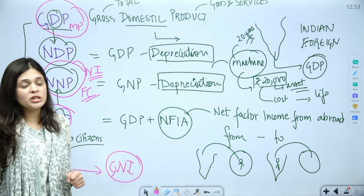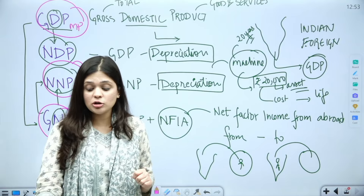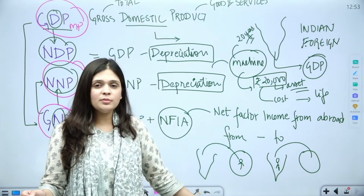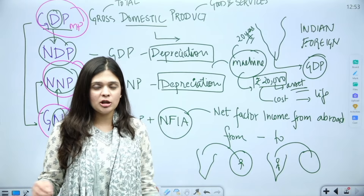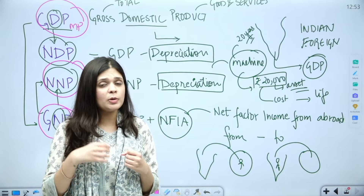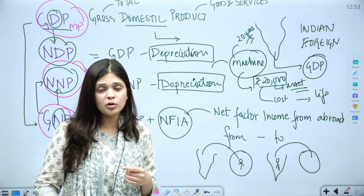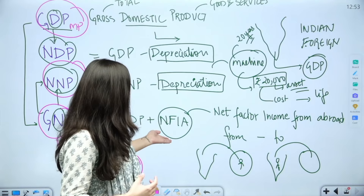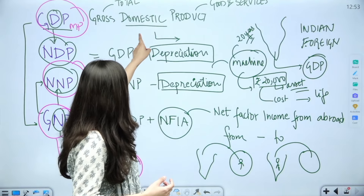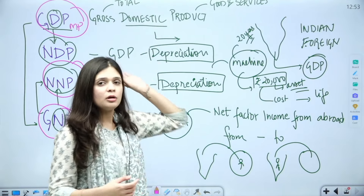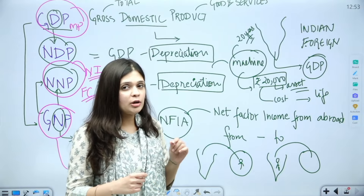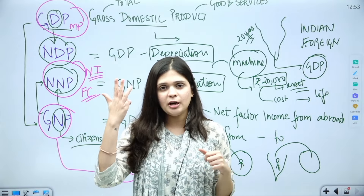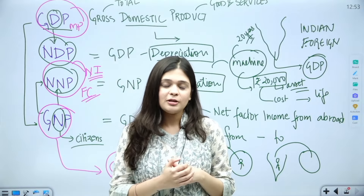I hope this is clear. These are four types of national income that you must know about. NFIA includes money earned by Indian companies and individuals outside the country. Depreciation and gross domestic product are the key components. I hope now you will not forget the difference between GDP, NDP, NNP, and GNP. Thank you so much.